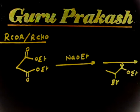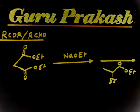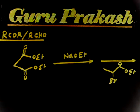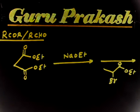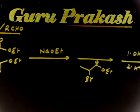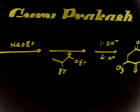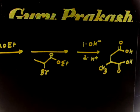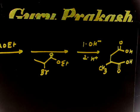Let us discuss this problem — you have to give me the mechanism. So this is the final product. You have to give me the mechanism for this reaction, which we have discussed in class. This is malonic ester synthesis. If you have one CH2 in the middle, this is called malonic acid, and this is a malonic ester — malonic acid synthesis, malonic ester synthesis.